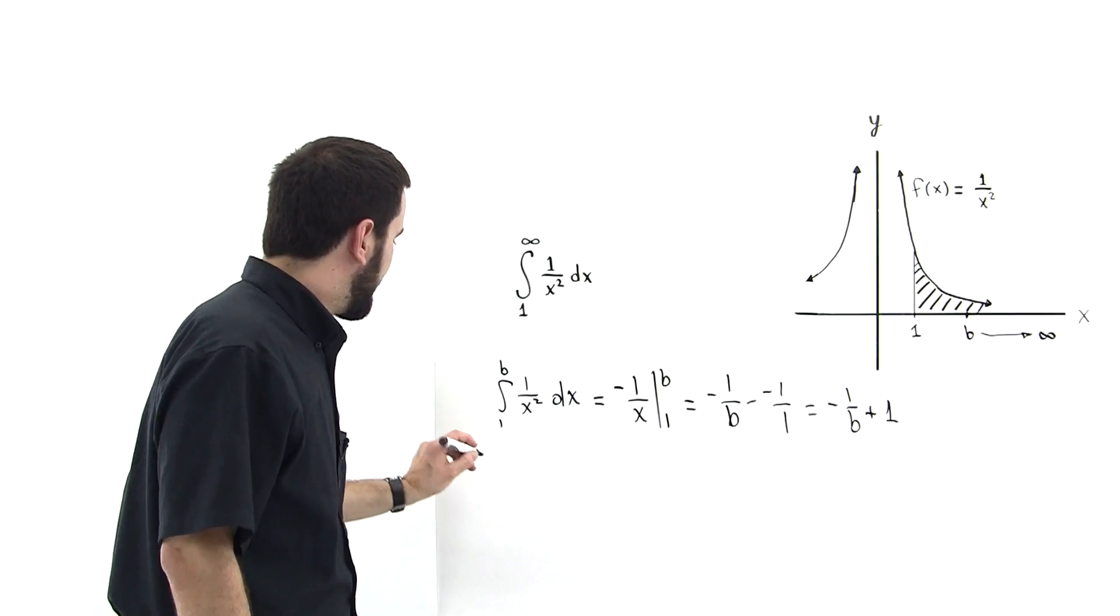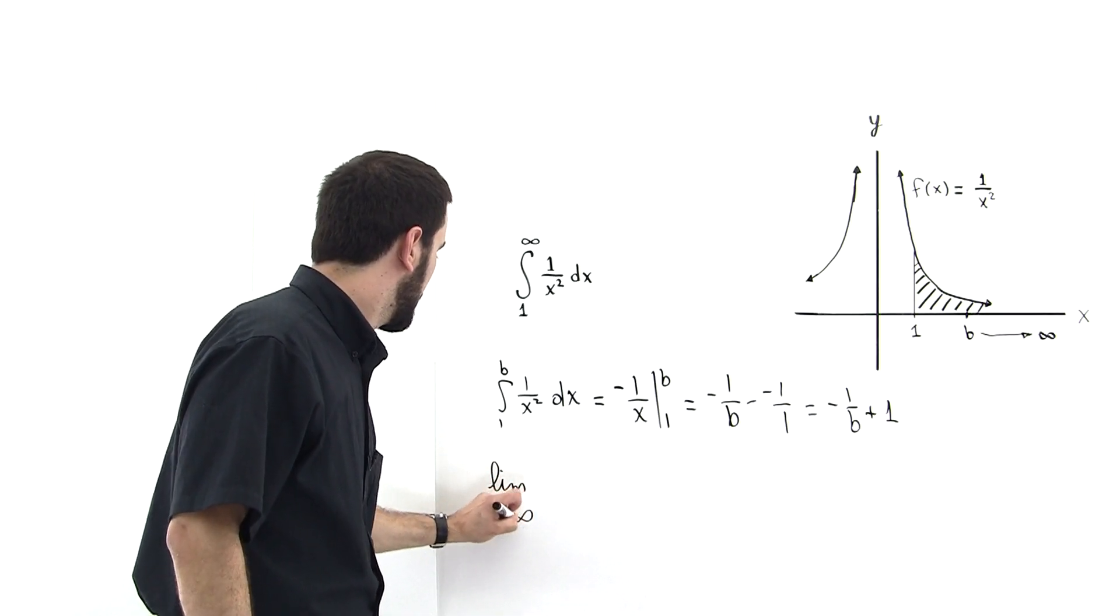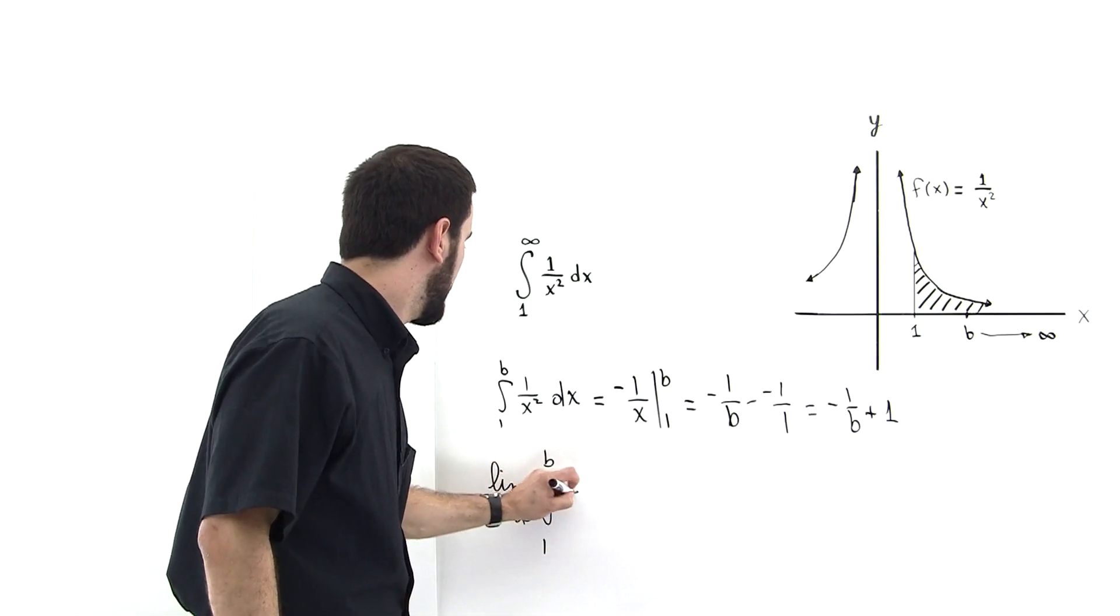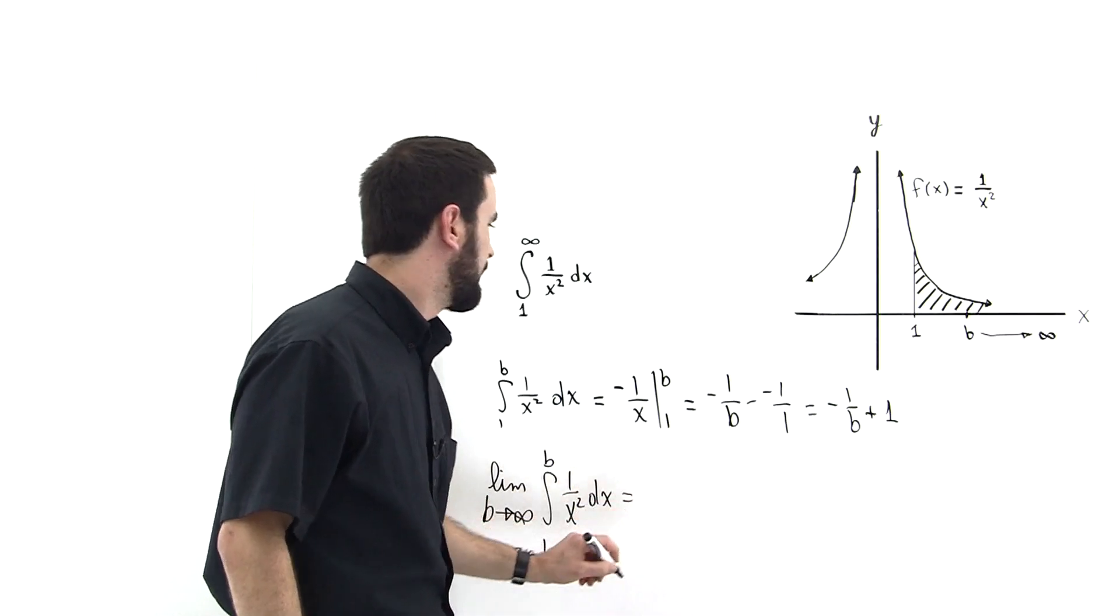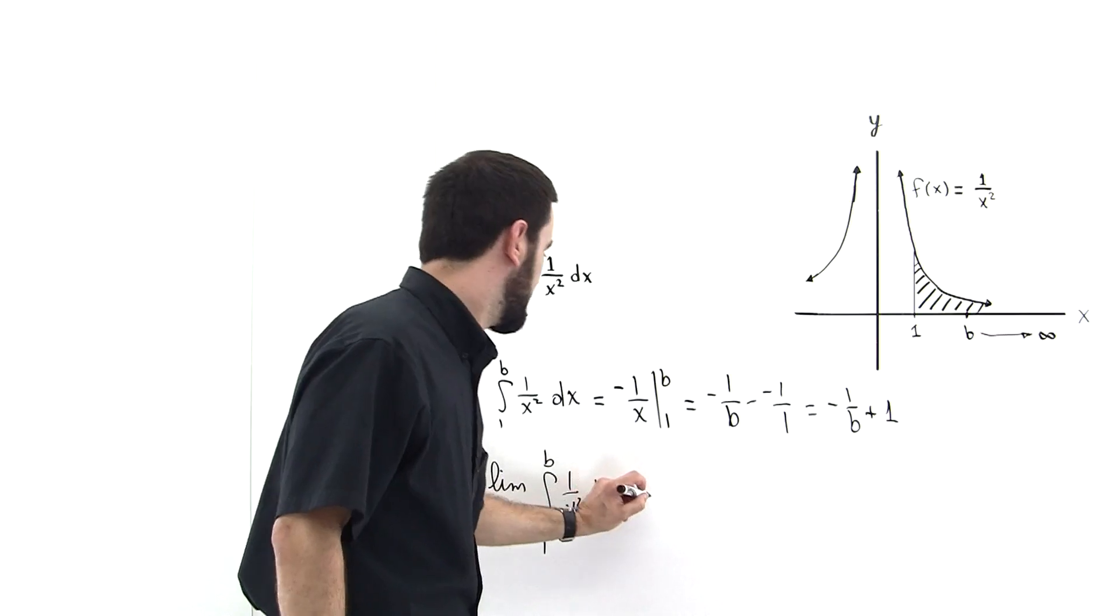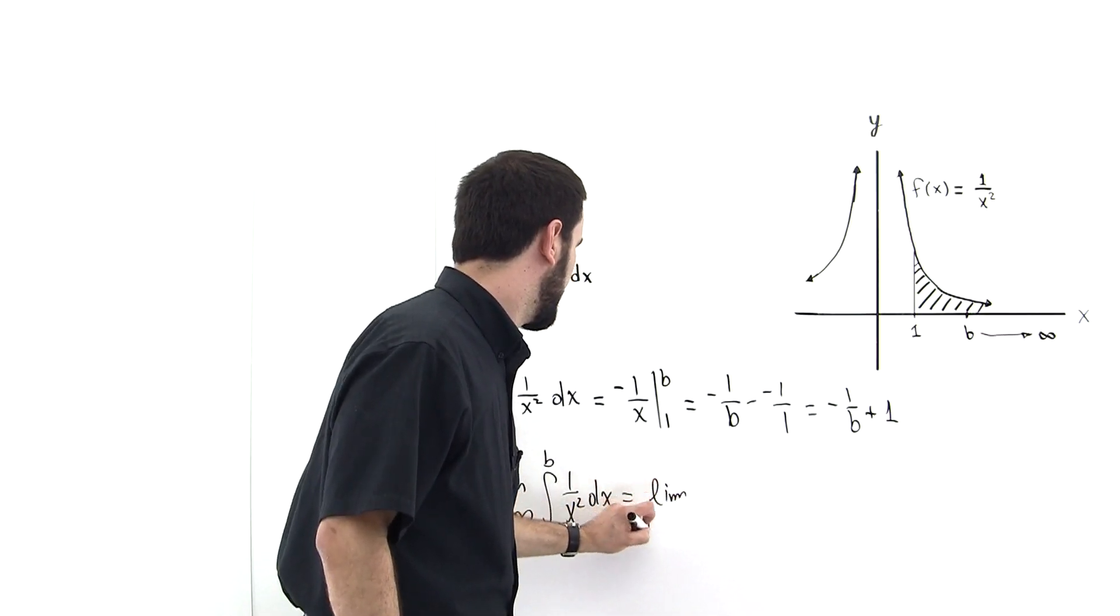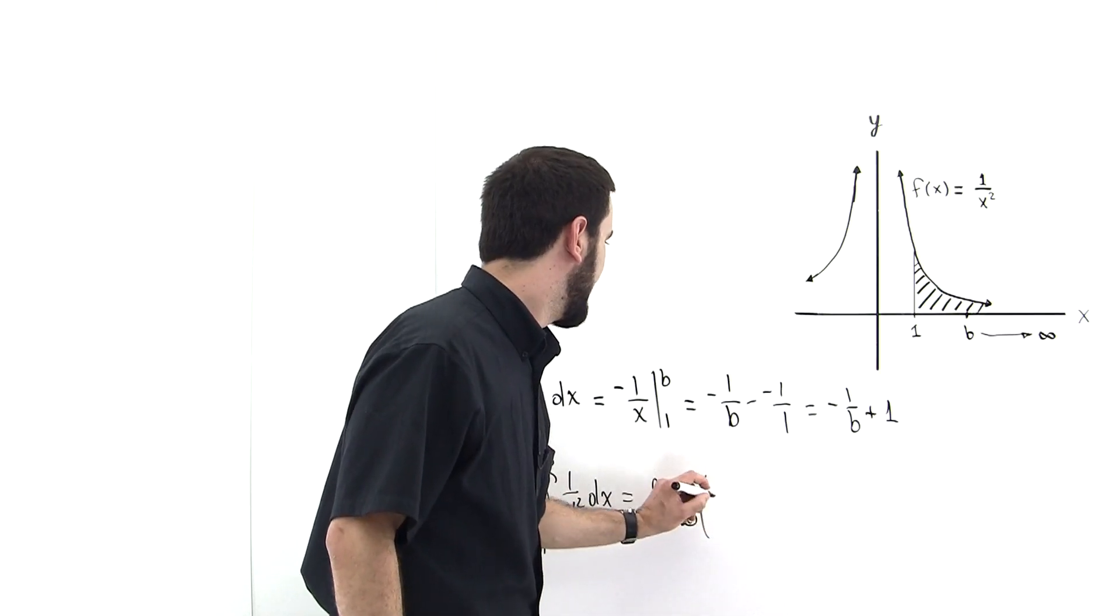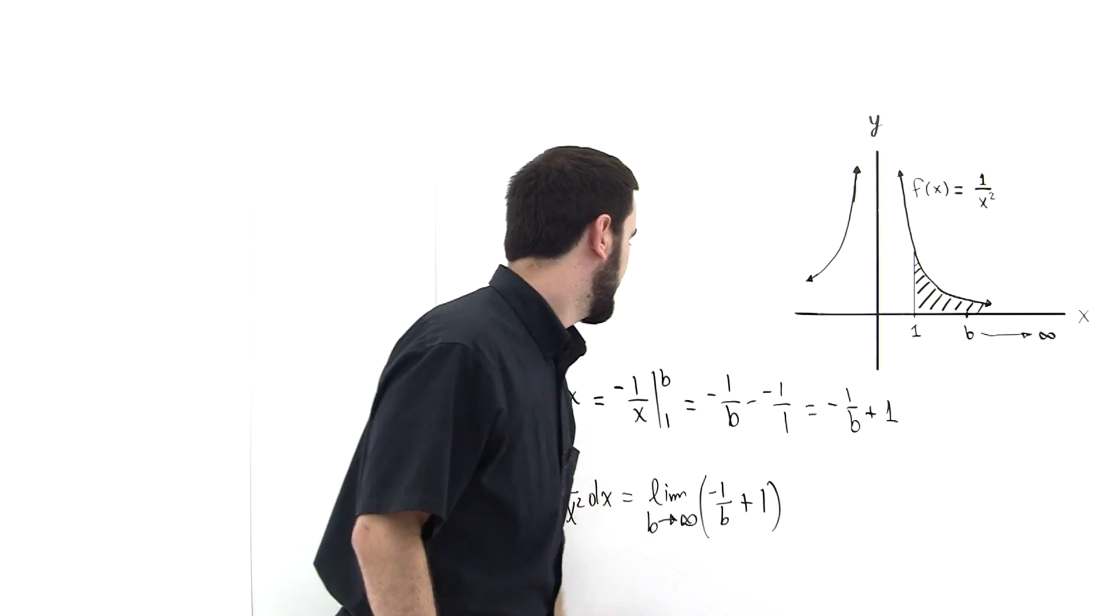So we can write down the following: the limit as b goes to infinity of the integral from 1 to b of 1/x² dx. We're going to skip the intermediate steps and write this as the limit as b goes to infinity of -1/b + 1.